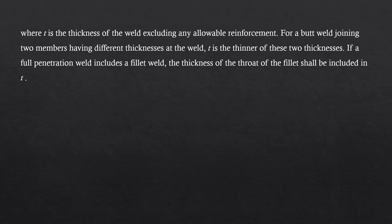Where T is the thickness of the weld excluding any allowable reinforcement. For a butt weld joining two members having different thicknesses at the weld, T is the thinner of these two thicknesses. If a full penetration weld includes a fillet weld, the thickness of the throat of the fillet shall be included in T.